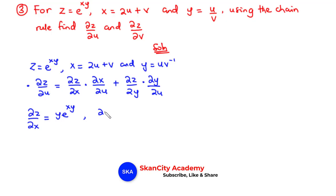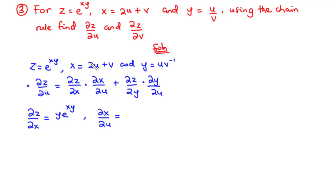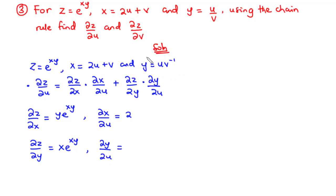For the partial derivative of x with respect to u, we have x equals 2u plus v. Differentiating term by term: derivative of 2u with respect to u is 2, and v is a constant so its derivative is 0. For partial derivative of z with respect to y, we differentiate e^(xy) with respect to y: differentiating y gives 1, so 1 times x is x, giving x times e to the power xy. For partial derivative of y with respect to u, we treat v to the power negative 1 as a constant, differentiate with respect to u, giving 1 times v to the power negative 1, which equals 1 over v.